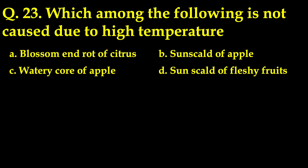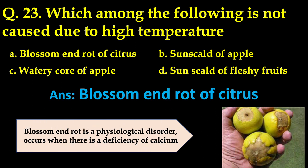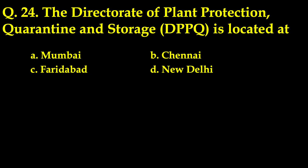Another question: which among the following is not caused due to high temperatures? There were four options, and the answer is blossom end rot of citrus — this is a physiological disorder that occurs when there is a deficiency of calcium. Another question: the Directorate of Plant Protection, Quarantine and Storage (DPPQS) is located at — the correct answer is Faridabad.